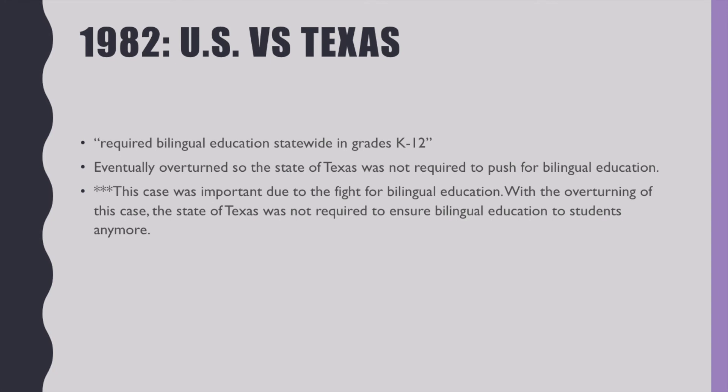In 1982, another case was U.S. v. Texas, which first required bilingual education statewide in grades K-12. Eventually, it was overturned, so the state of Texas was no longer required to push for bilingual education. This case was very important due to the fight for bilingual education. With the overturning of this case, the state of Texas was not required to ensure bilingual education for students anymore. This again illustrated the divide over bilingual education and the push to regulate it to help ELL students.